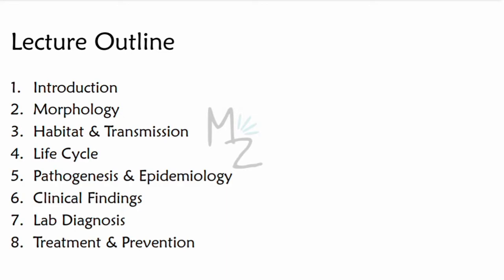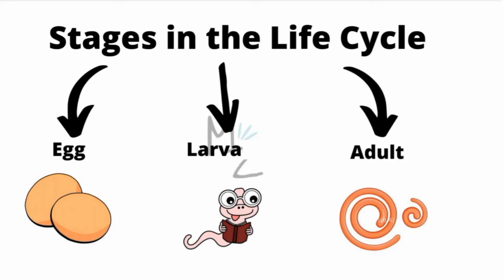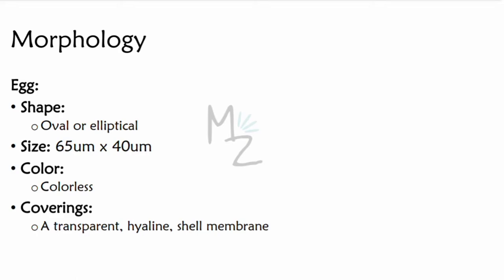Lecture outline: we've introduced Ankylostoma duodenale and Necator americanus. Now we'll talk about their morphology, habitat and transmission, life cycle, pathogenesis and epidemiology, clinical findings, lab diagnosis, treatment, and finally prevention. Before talking about morphology, you should know the three developmental stages that exist in the life cycle of every nematode. As Ankylostoma and Necator are nematodes, they have these three stages: first is egg, second is larva, and third is adult.